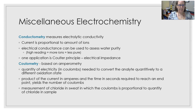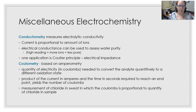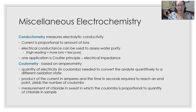Coulometry is based on amperometry — similar to the Clark PO2 electrode. The quantity of electricity in coulombs needed to convert the analyte quantitatively to a different oxidation state is measured. The product of the current in amperes and the time in seconds required to reach the endpoint yields the number of coulombs. This has been used in the measurement of chloride in sweat, where the number of coulombs is proportional to the quantity of chloride in the sample.